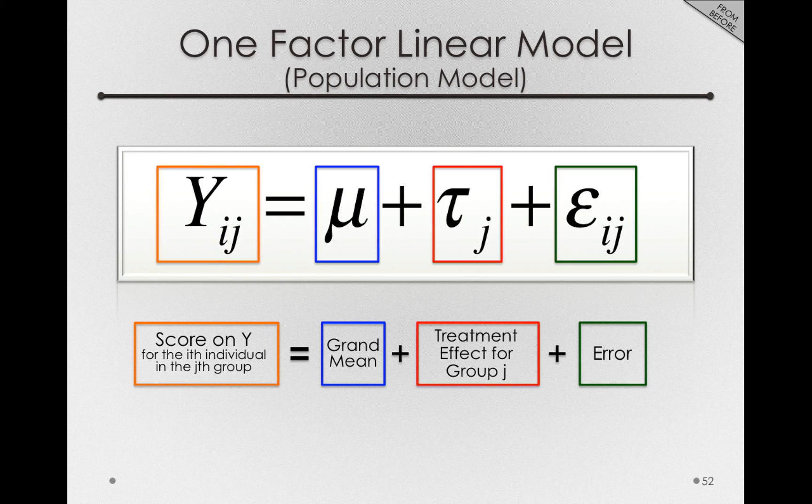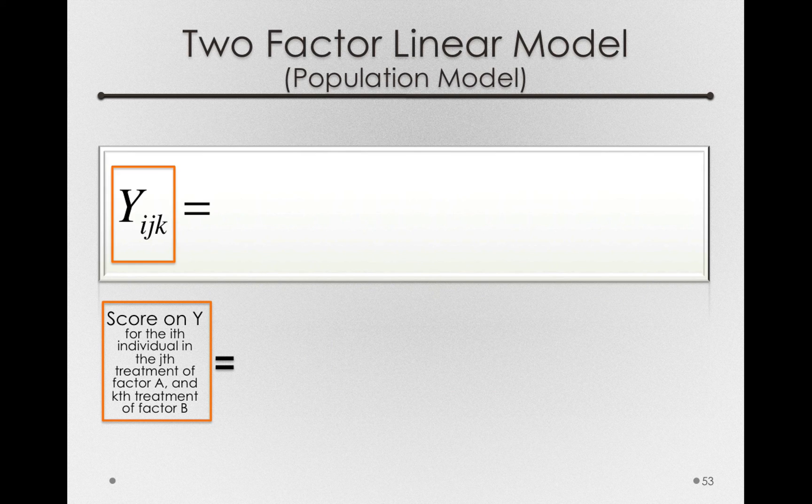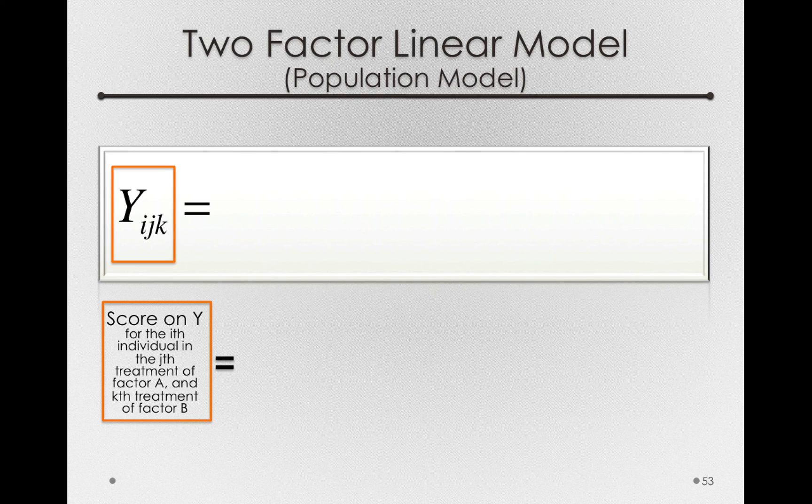Starting with the score on y in our two-factor linear model, we're going to add a subscript. In this case, it'll be the Y_ijk. That is, the score on y for the ith individual in the jth treatment of factor A and the kth treatment of factor B.